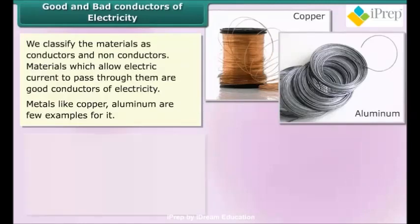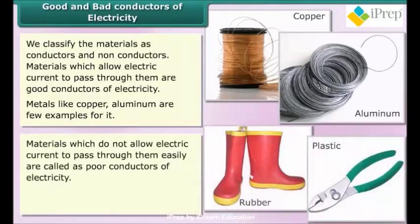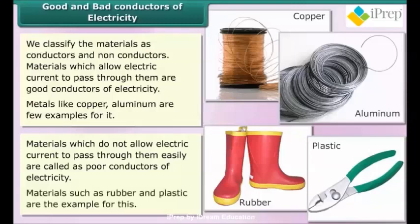Materials which do not allow electric current to pass through them easily are called as poor conductors of electricity. Materials such as rubber and plastic are examples of this. We use testers to test the conductivity of materials which are in solid state.